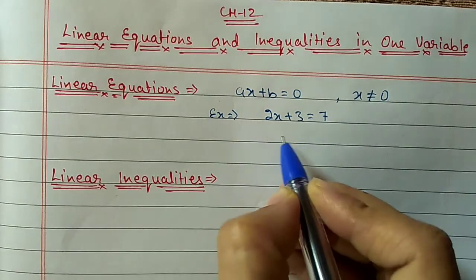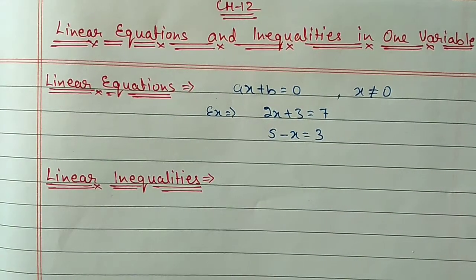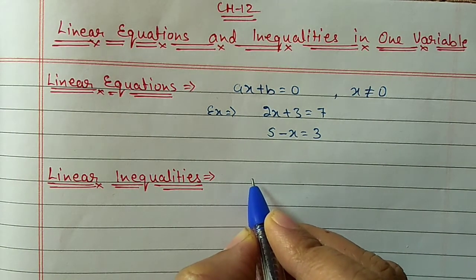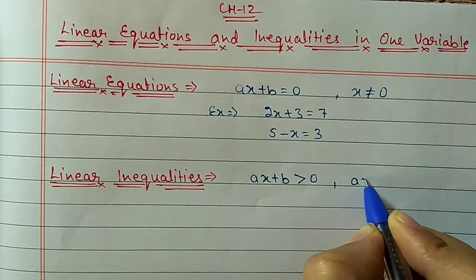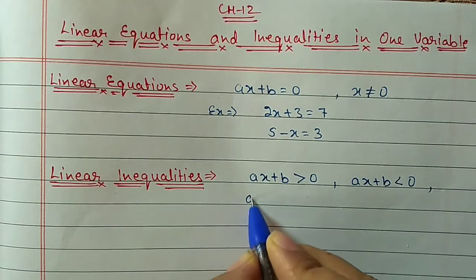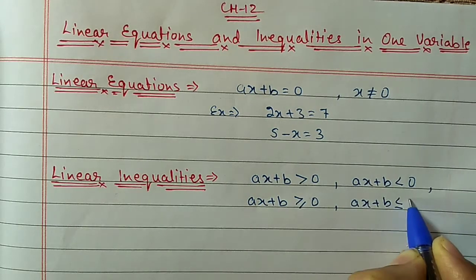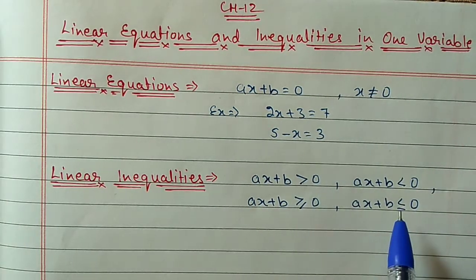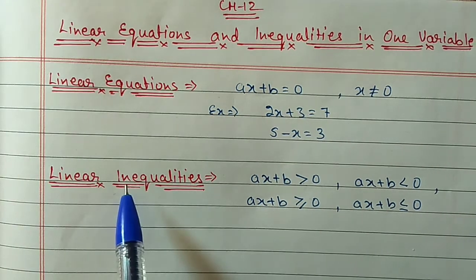Some examples of linear equations: 2x plus 3 equal to 7, or 5 minus x equal to 3. Next, what are linear inequations? Statements which do not have the equal-to symbol, but instead have greater than, less than, greater than or equal to, or less than or equal to symbols — if any one of these four symbols is present, we call it a linear inequation.